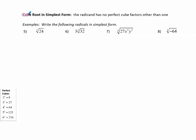Now let's look at the cube root in simplest form. Again, the radicand will have no perfect cube factors other than 1. Here's a list of perfect cubes: 2 cubed is 8, 3 cubed is 27, 4 cubed is 64, 5 cubed is 125, and 6 cubed is 216. There are many more, but these are the ones we'll see most often — it would be helpful to memorize them.